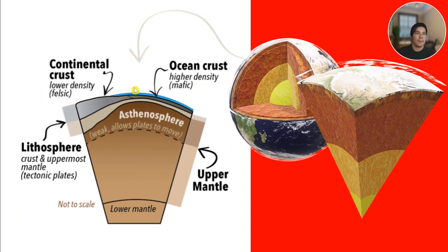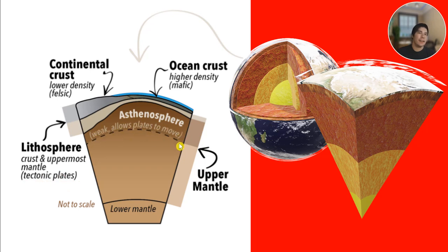We have the ocean crust, which is of higher density, and also the continental crust, which is of lower density. The lithosphere comprises the crust and the upper mantle — these are the tectonic plates. The asthenosphere is a weak layer which allows the plates to move, located in the upper mantle below the lithosphere.